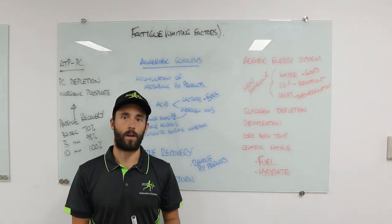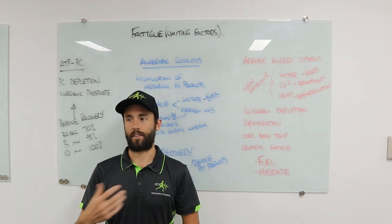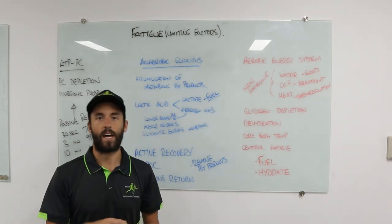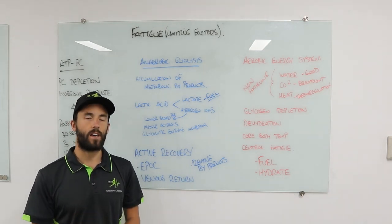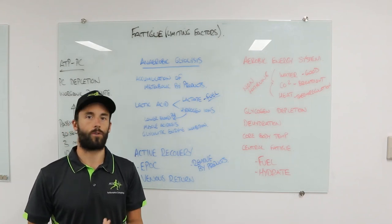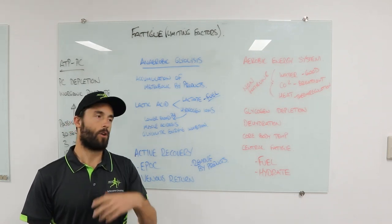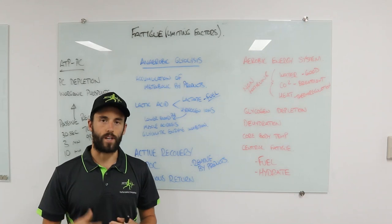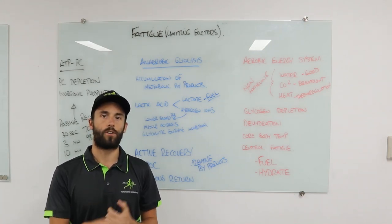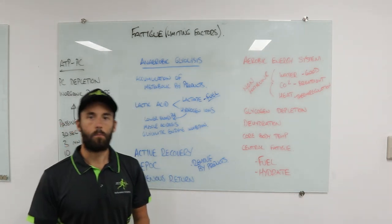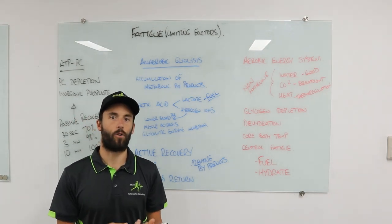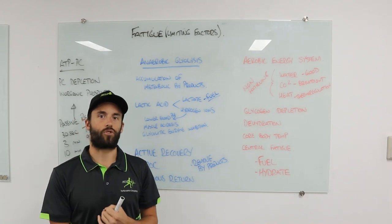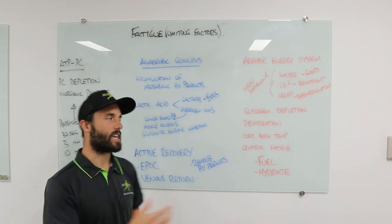So an accumulation of metabolic byproducts causes fatigue. To recover, we need to get those byproducts out of the system using oxygen, which means slowing down intensity. We use an active recovery — completing the same activity at a greatly reduced intensity. After rowing, do a light row; after swimming, a light swim; after running, jog or walk. It's important to do the same activity so blood flow is redistributed to the correct muscle groups. The main goal of active recovery is to extend EPOC — excess post-exercise oxygen consumption.